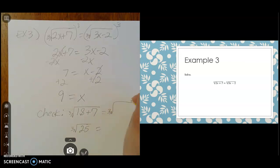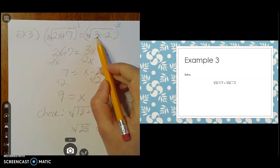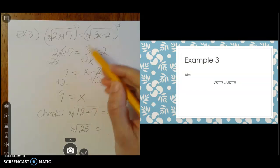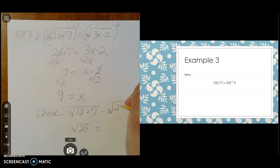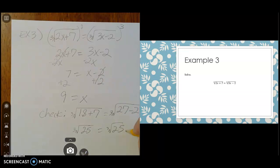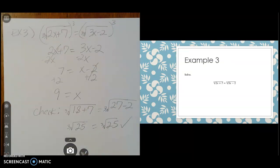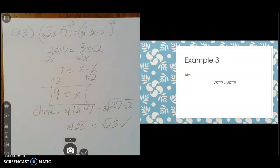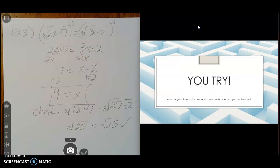On the other side, with the cube root of 3x minus 2, I do 3 times my x, which is 9. So 3 times 9 is 27 minus 2, which is also 25. I've got the cube root of 25 equals the cube root of 25. That's perfect, and 9 equals x is our answer. Now it's your turn. You get to try one and show me how much you've learned.